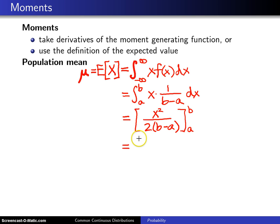And when you plug in b, you get b squared. When you plug in a, you get a squared in the numerator divided by twice b minus a.